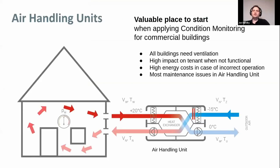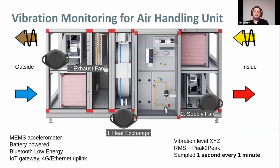When coming to commercial buildings, we did dialogues and research with our customers to find out what is a good place to start applying this technology. We found that the air handling units of ventilation systems are a very good place to start because all buildings need ventilation, there's a high impact on the tenant when the system doesn't work — the air gets bad very quickly — as well as high energy cost if they are running when they shouldn't or running incorrectly. Many maintenance issues regarding ventilation systems are found in the air handling unit, which is a centralized component. A modern type for balanced ventilation has three rotating components: an exhaust fan, a supply fan, and a rotating heat exchanger motor.